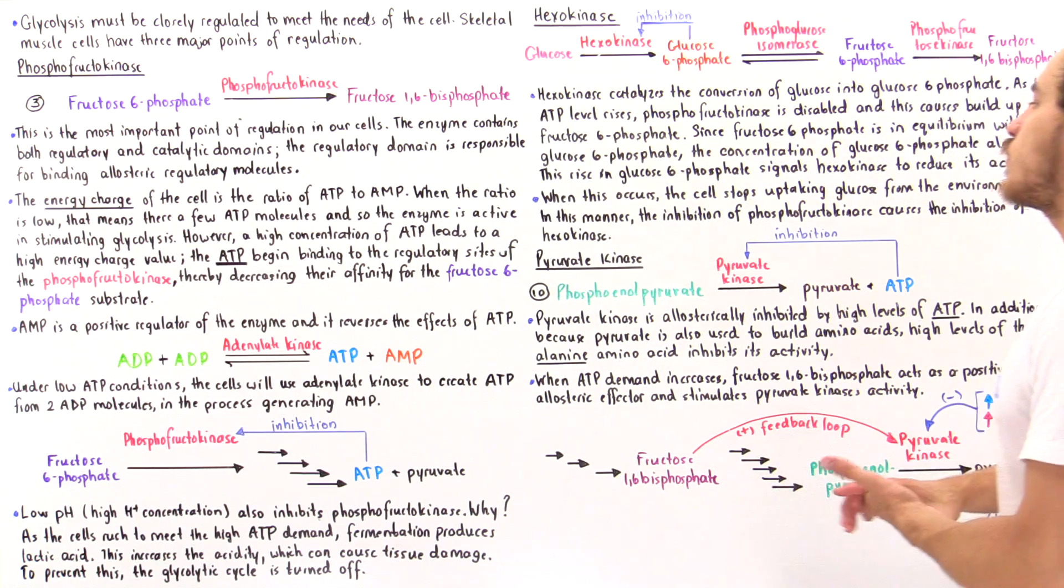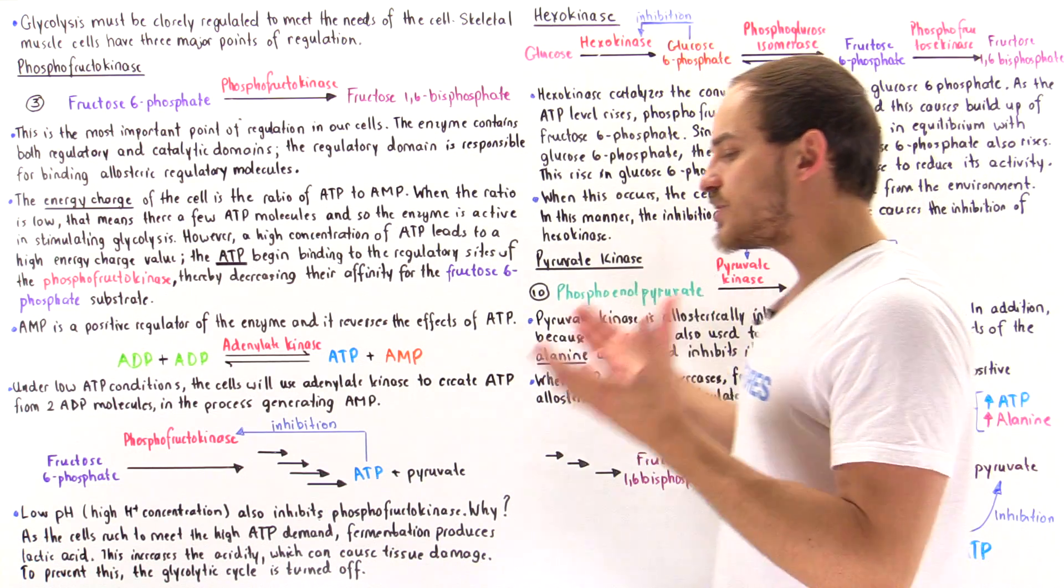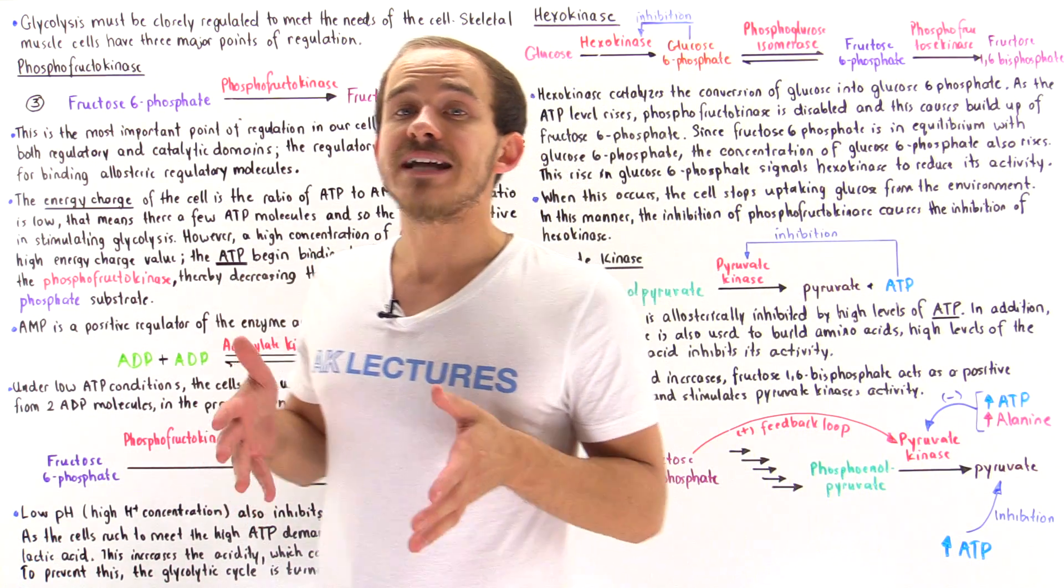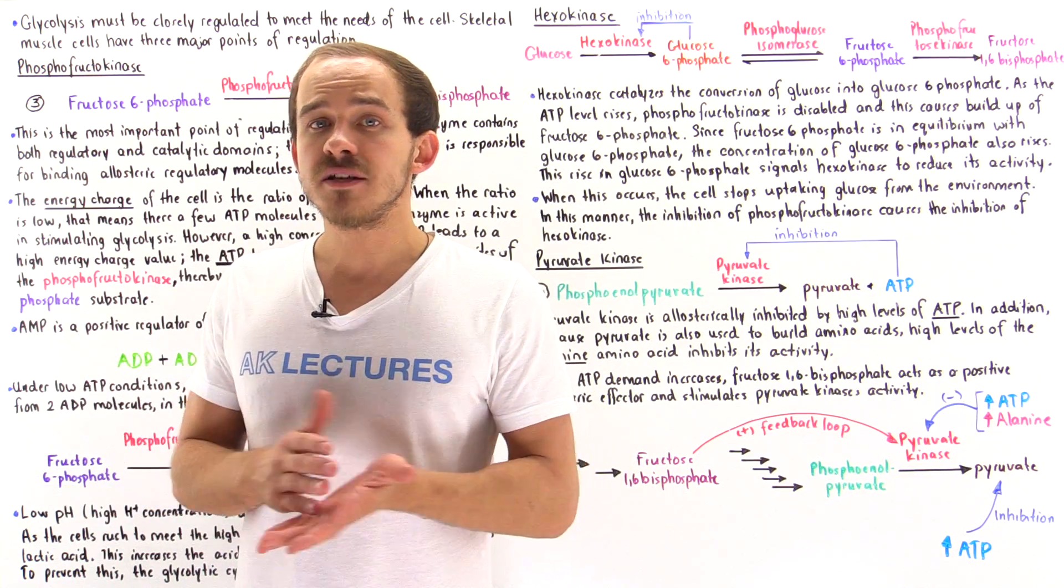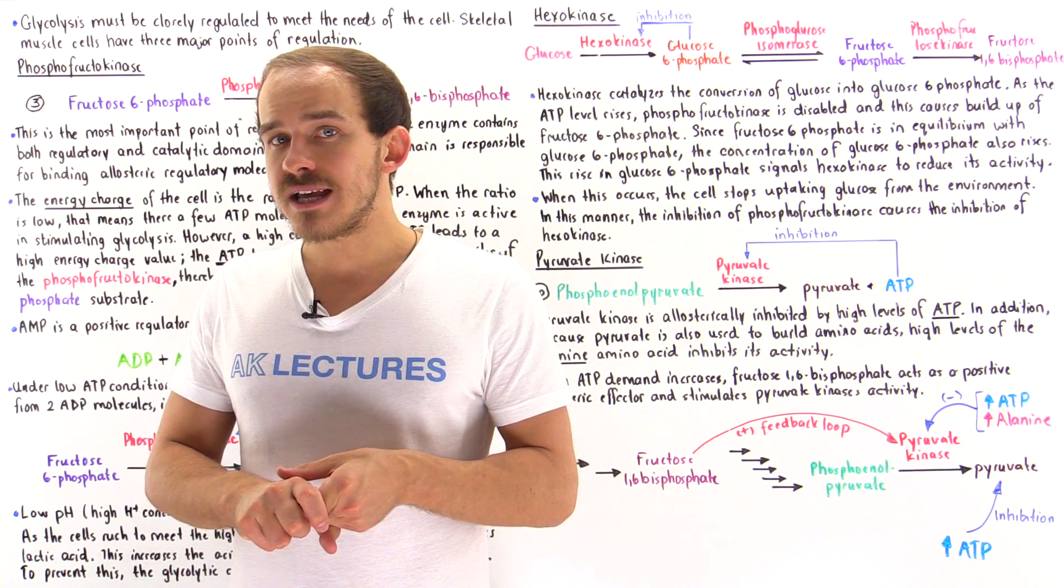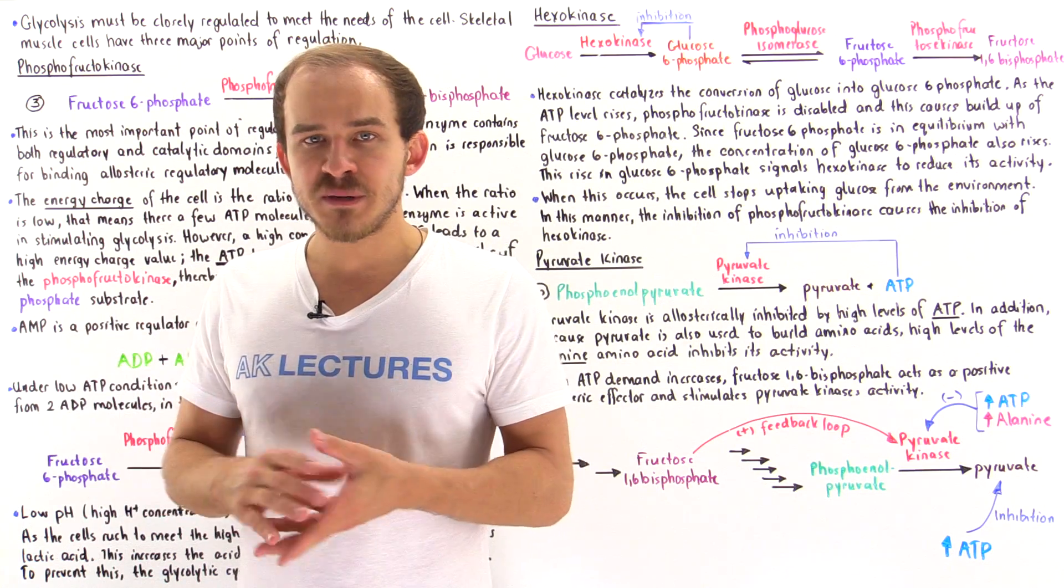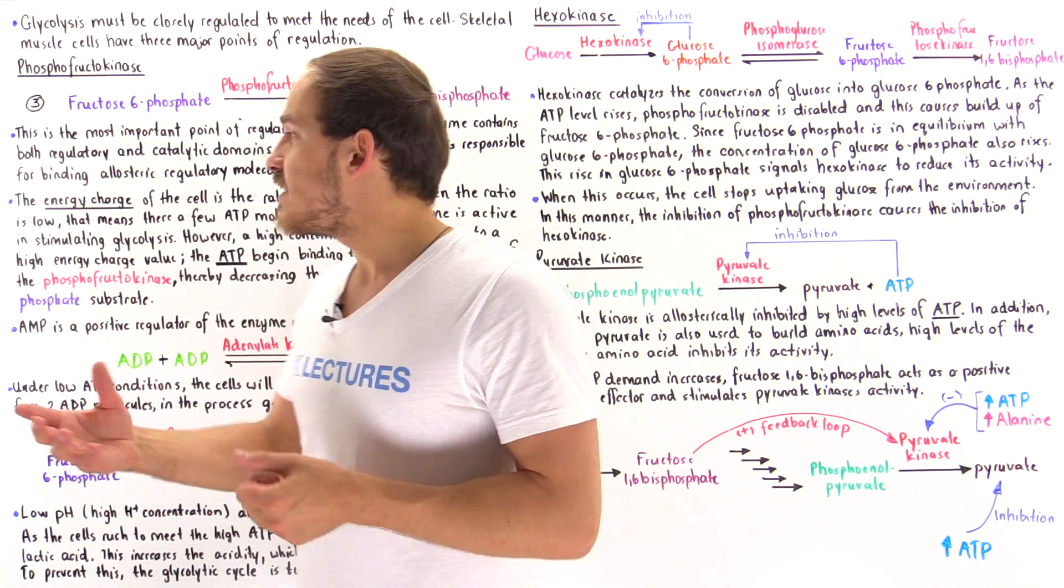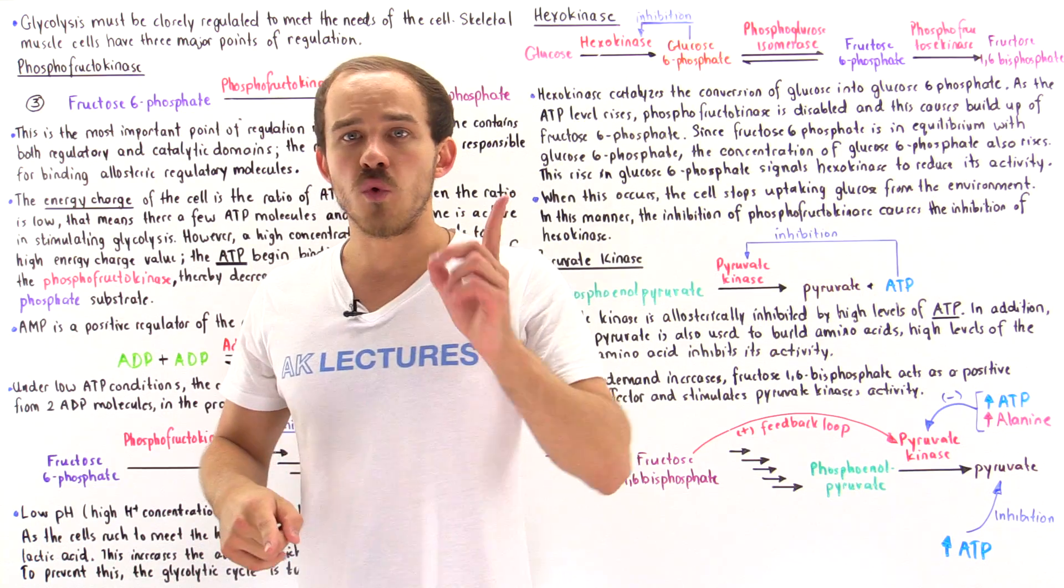So now let's summarize our results. And let's begin by assuming that we're not exercising, so our skeletal muscle tissue is at rest. And what that means is we'll have plenty of ATP molecules to go around and so the energy charge of the cell will be high.